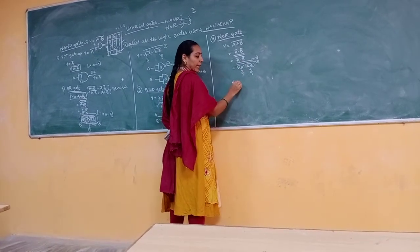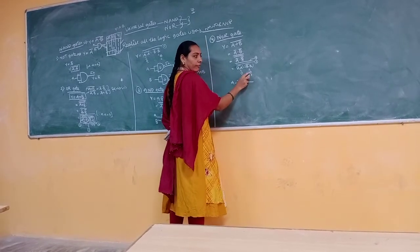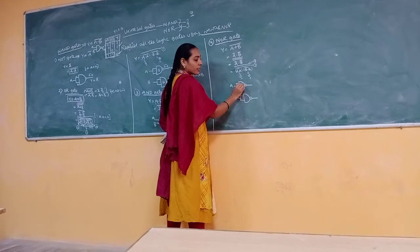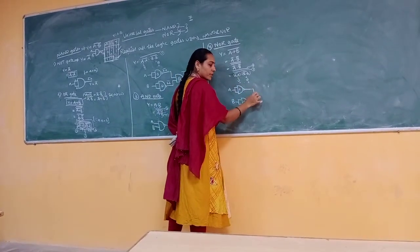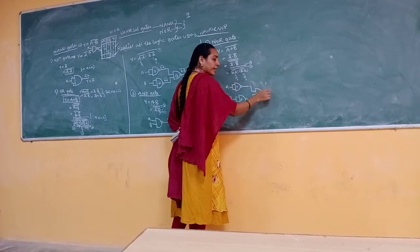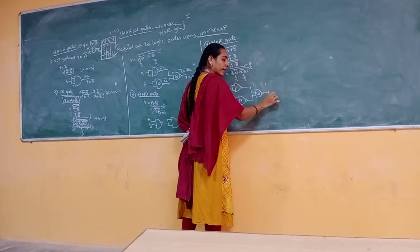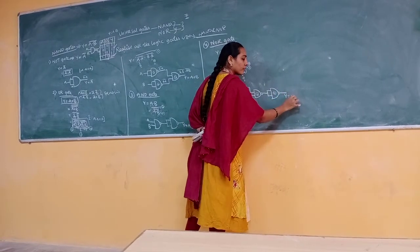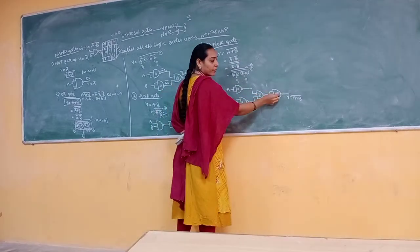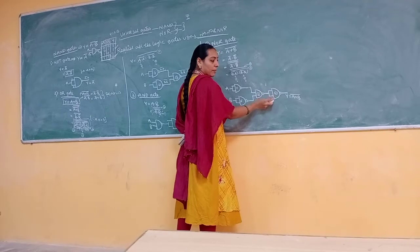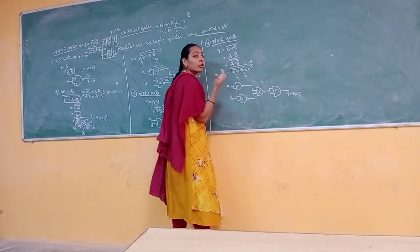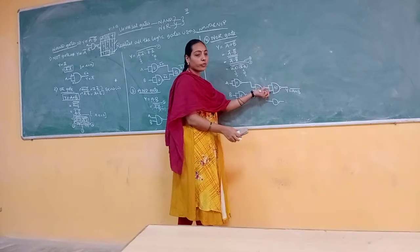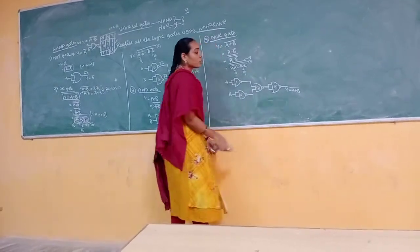Drawing the NOR gate realization: A goes into the first NAND gate (A·A)̄, B goes into the second NAND gate (B·B)̄, these combine into a third NAND gate, and a fourth NAND gate gives the final output Y = (A+B)̄. Note: for the NAND gate, we require a minimum of two inputs, which is why we represent single-input inversions with both inputs tied together.